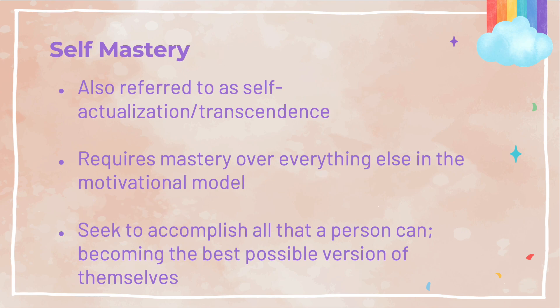Lastly, we reach the final stage in the hierarchy of needs, which is called self-mastery. This stage can also be referred to as self-actualization or even transcendence. To reach this stage, you must have mastery over everything else in the motivational model. At this stage, people are seeking to accomplish being the best versions of themselves. This is where people seek to create things such as writing books and drawing art, all for the sake of the art form and not for the money. It would be where someone creates a game for the sake of the art form of making games and nothing more.